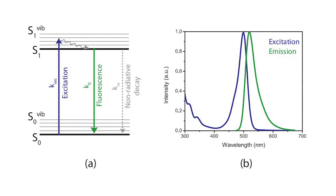I'm pretty sure you all know about the excitation and emission mechanism of fluorescence materials. Briefly, a fluorescence molecule can be excited to a higher vibrational energy state with a light source. This excitation is most efficient at the optimal excitation wavelength of the fluorophore, which most often also corresponds to the absorption maximum. After this process of single photon absorption, the molecule quickly relaxes.